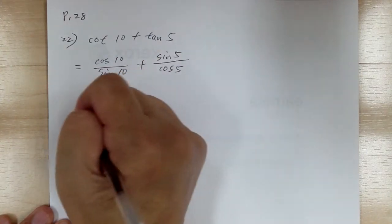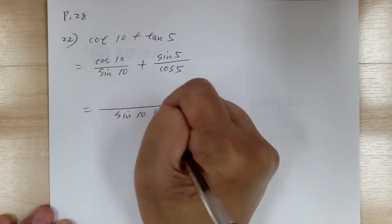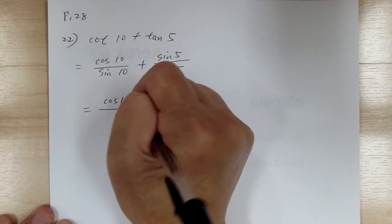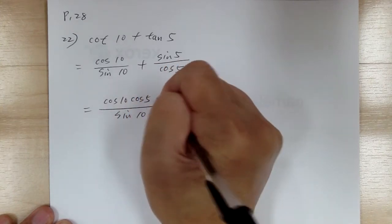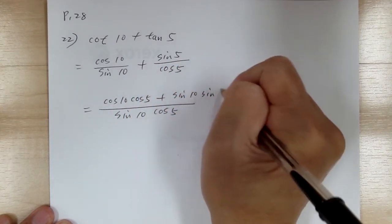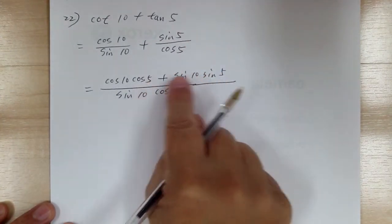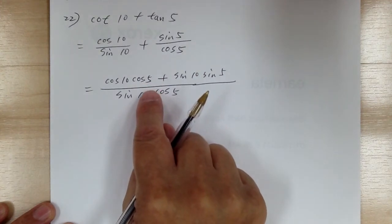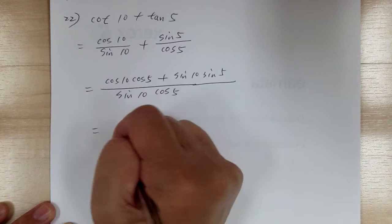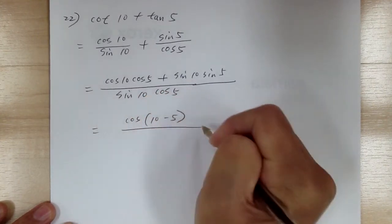Let's make it into a common denominator, so it would be sine 10 cosine 5. This gives you cosine 10 cosine 5 plus sine 10 sine 5. If you notice, this is the difference identity for cosine, so this equals cosine of 10 minus 5.